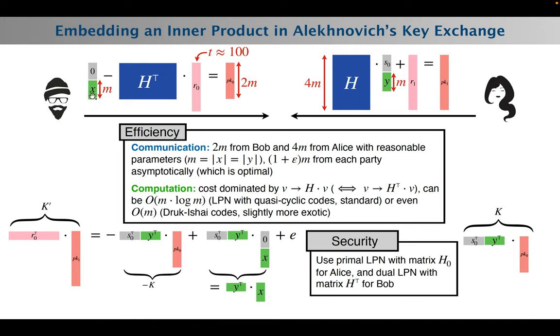By embedding in the right way some input vector X and some input vector Y inside this Alekhnovich Key Exchange, computing the shared key actually boils down to computing additive shares minus K and K of the inner product between X and Y plus some noise term. The communication we show is very efficient. For standard parameters, it will be 6M, where M is the length of the vectors, so really a small constant factor overhead. Asymptotically, it becomes very close to just sending the inputs in the clear, so optimal. The computation is quasi-linear using standard variants of LPN based on quasi-cyclic codes and can even be made strictly linear using more exotic variants of LPN.